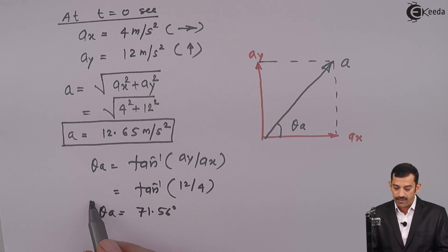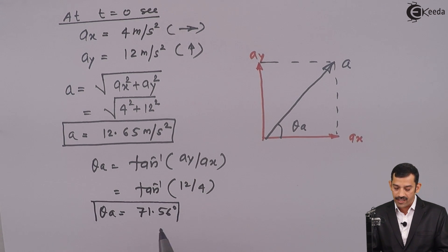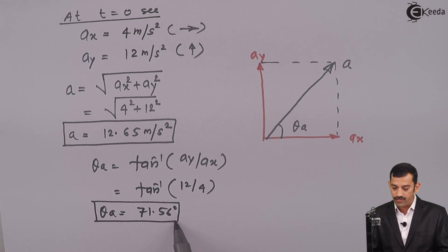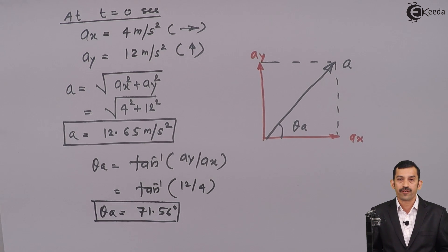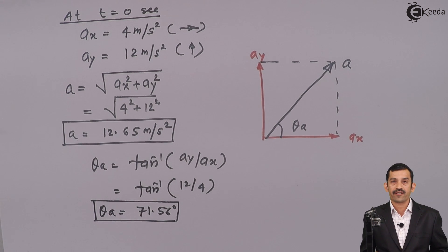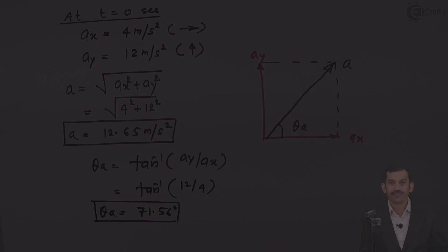The problem asked to find velocity and acceleration at t equal to 0 second, and we have obtained both answers: the resultant velocity and resultant acceleration. Thank you.